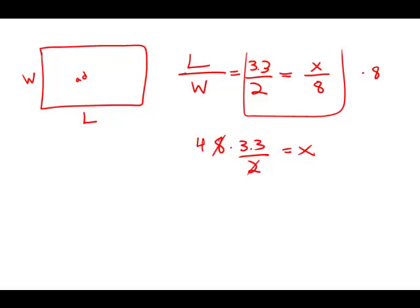So, of course, 2 goes into 8 four times, so we're left with x equals 4 times 3.3. Well, that multiplies out to 13.2, and this is very close to answer choice C.